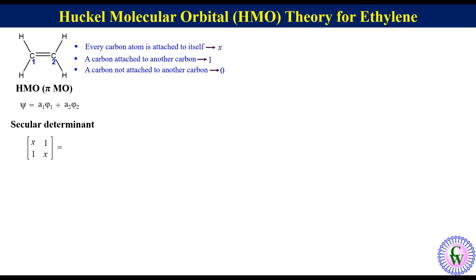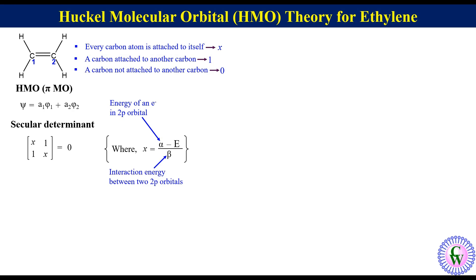This determinant equals 0, where x = (α − E) / β. Alpha is the energy of an electron in a 2p orbital; beta is the interaction energy between 2p orbitals, which is always negative; and E is the energy of a particular Hückel molecular orbital. For a 2×2 determinant expanded as ad − bc = 0, our determinant expands as x² − 1² = 0.